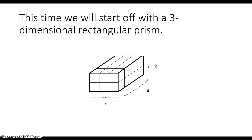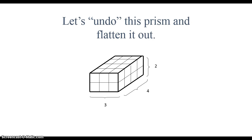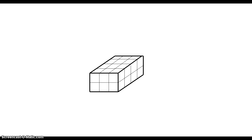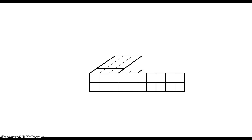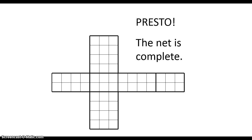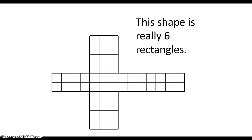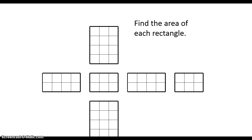So this time, let's start off with a three-dimensional rectangular prism. I need to undo this prism and flatten it out. There are going to be, all together, six rectangles in this net once I flatten it out. Now, all I need to do is find the area of each rectangle.